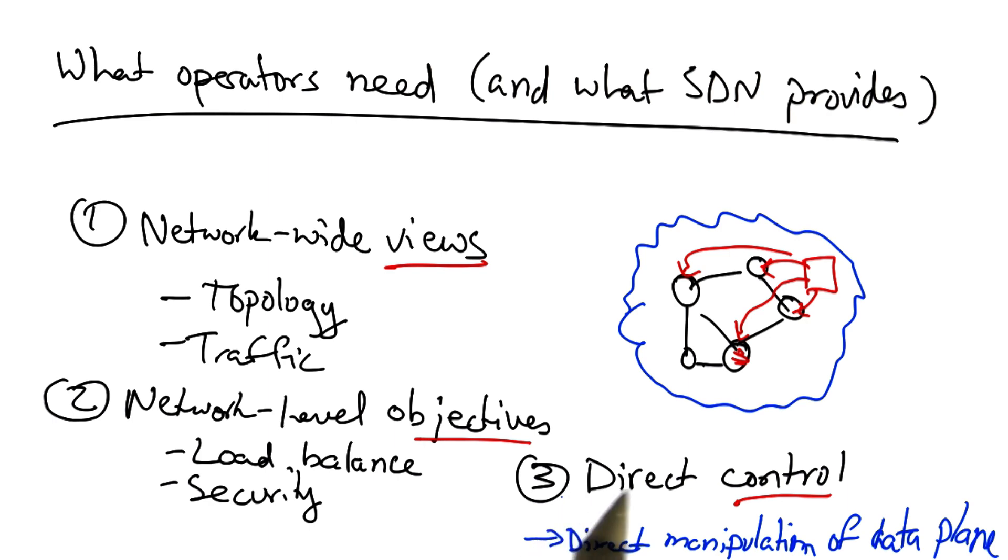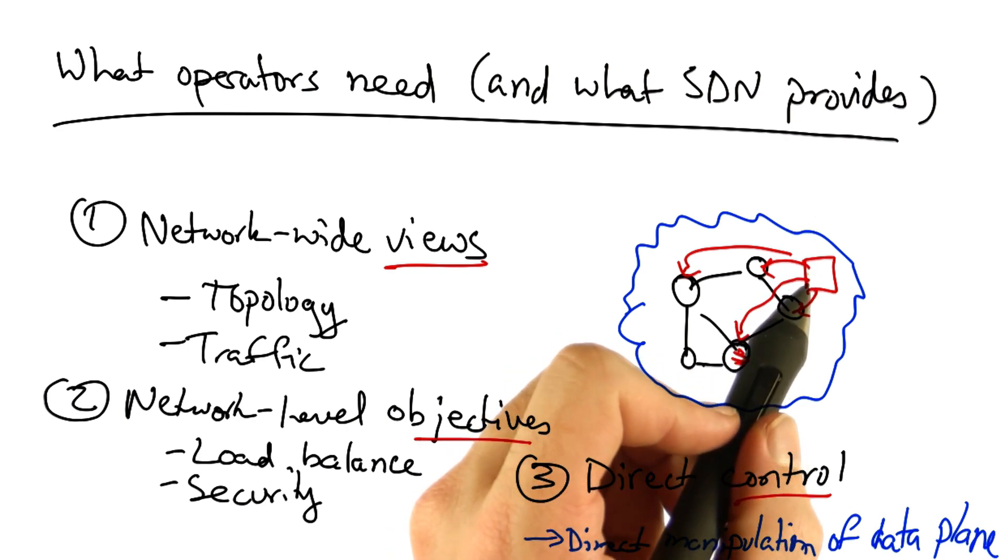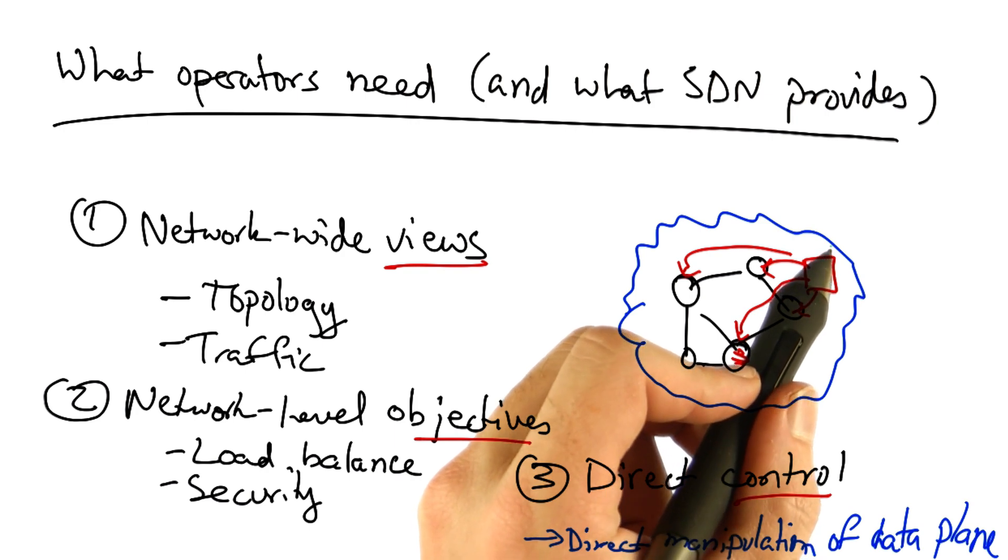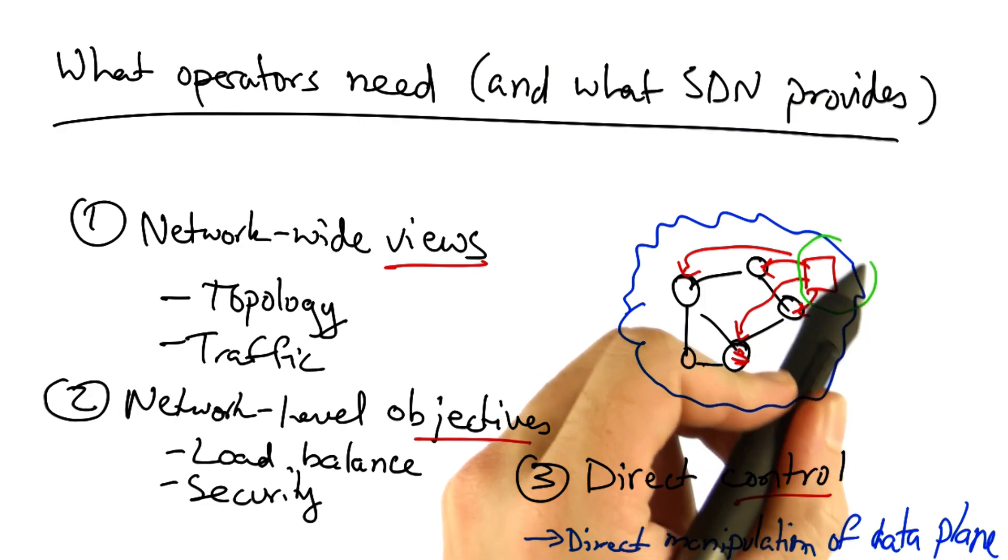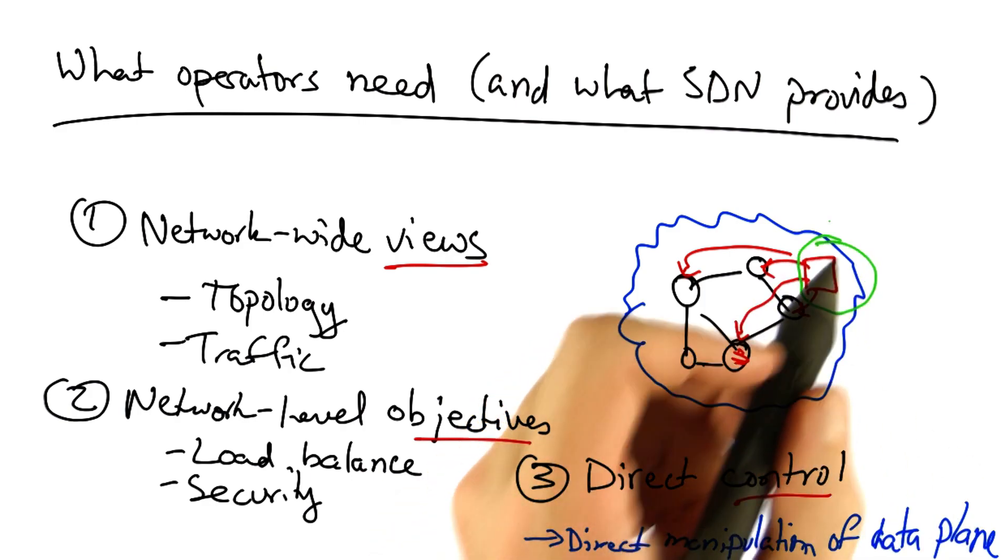Rather than having to configure each device individually and guess or infer what might happen, software defined networking allows a network operator to express network-level objectives and direct control from a logically centralized controller.